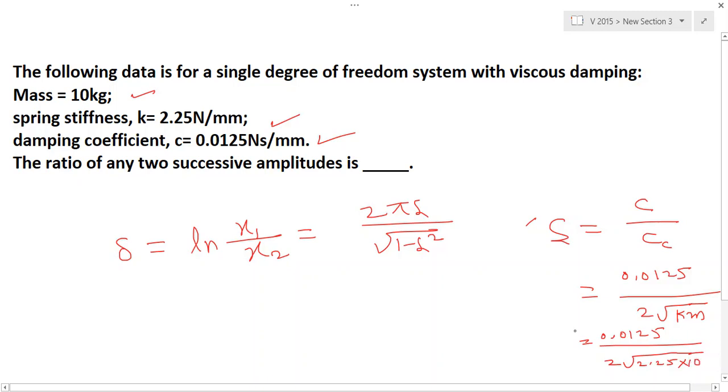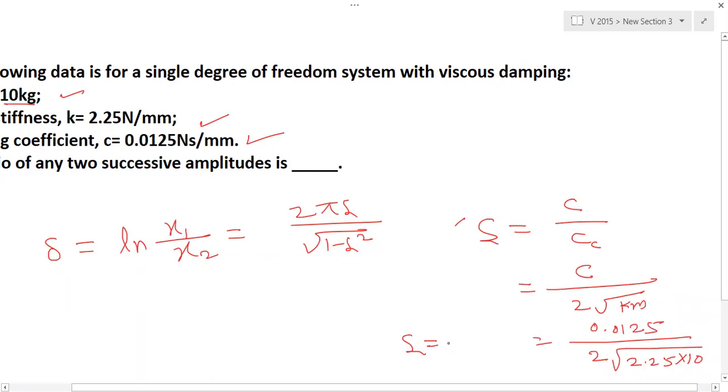Just put this value here: ln(x₁/x₂) = 2π × 0.04167 ÷ √(1 - 0.04167²). After solving that, we got some values. δ is equal to 0.26225.